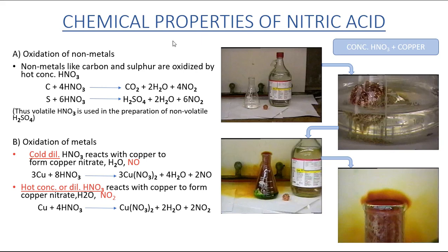Next are the chemical properties of nitric acid. Only those within the scope of the syllabus are required for examination. First is the oxidation of non-metals. Non-metals like carbon and sulfur are oxidized by hot concentrated nitric acid. Dilute nitric acid will not combine with non-metals — remember, it must be hot concentrated nitric acid.